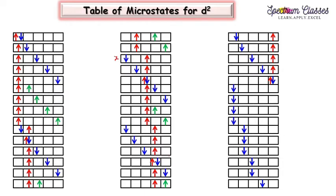Moving to the next column, from here onwards we are just having only down spins. In the next columns we put the down spin up to the last one in this manner. For each subsequent column — second, third, fourth, fifth — we move only on the right-hand side. This is how you can write down all 45 microstates for these two electrons.